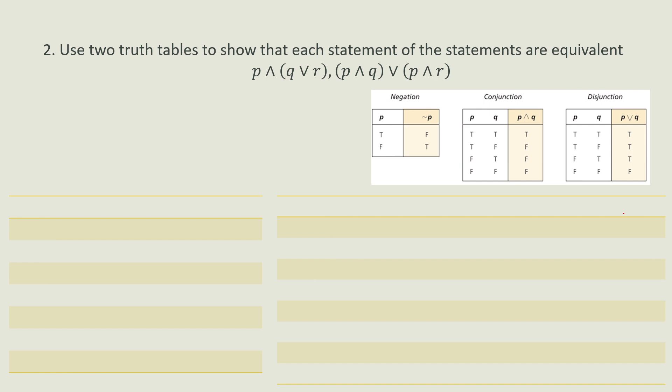Next, let's proceed with the next part involving P, Q, and R. Since there are three variables, we need 2 raised to 3, which is equal to 8 rows.